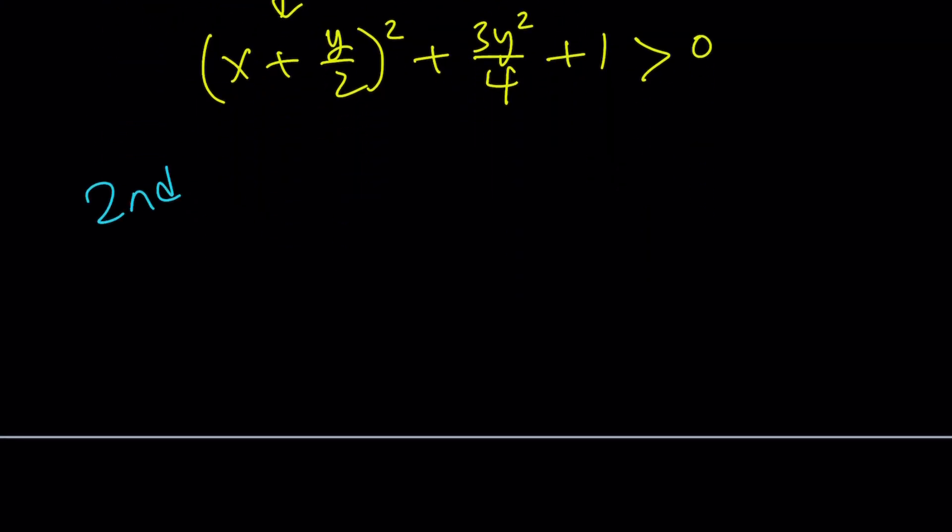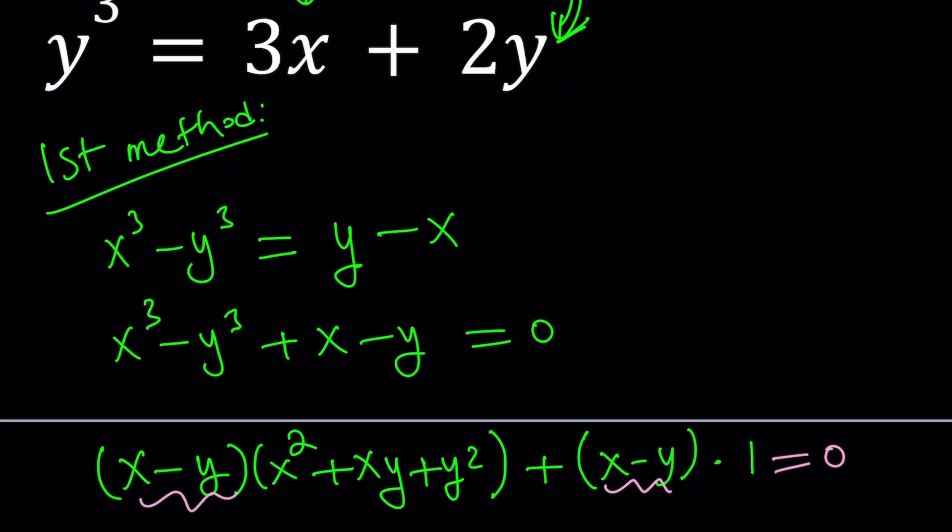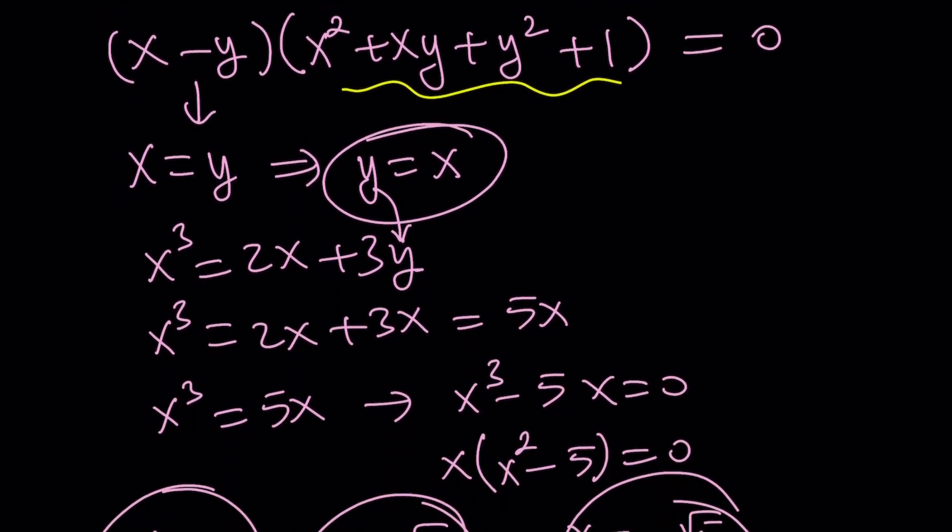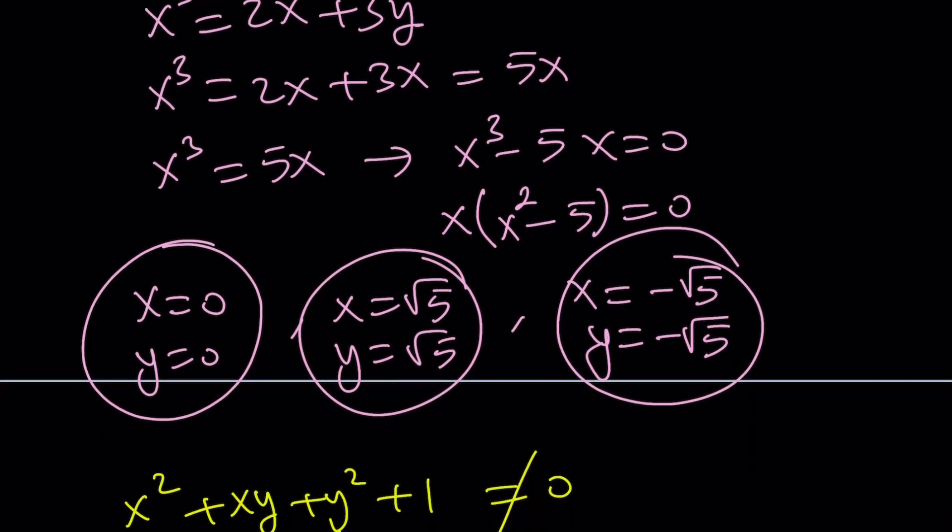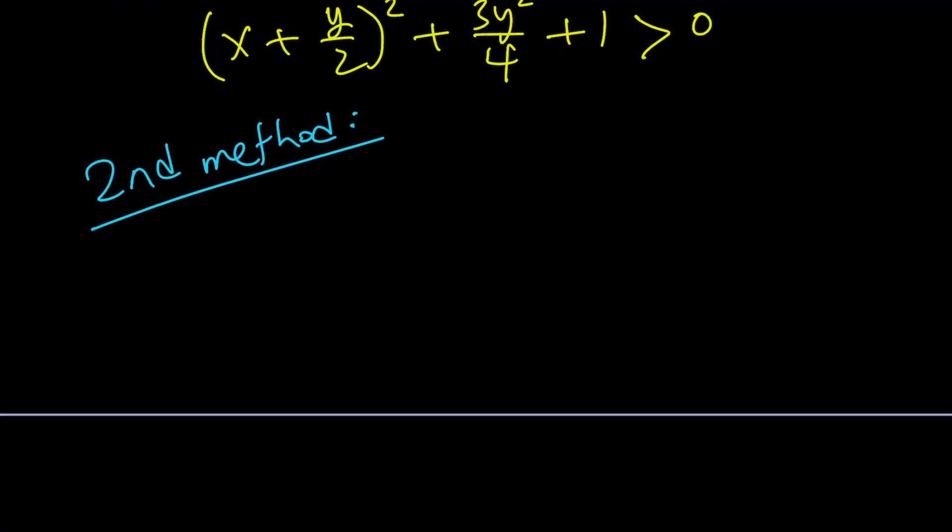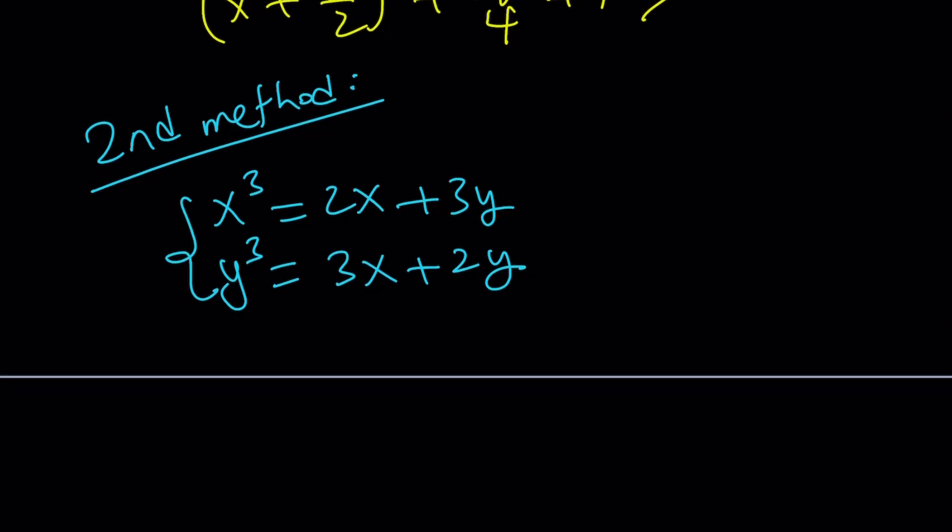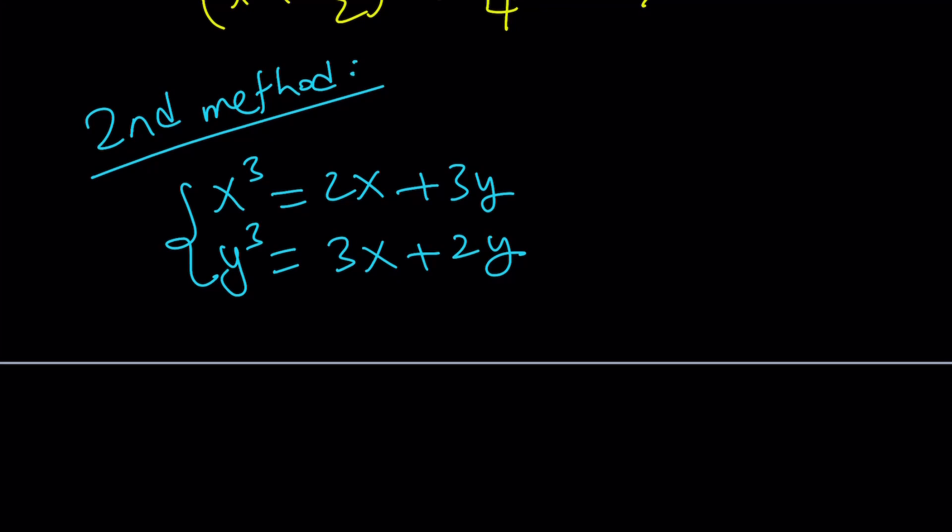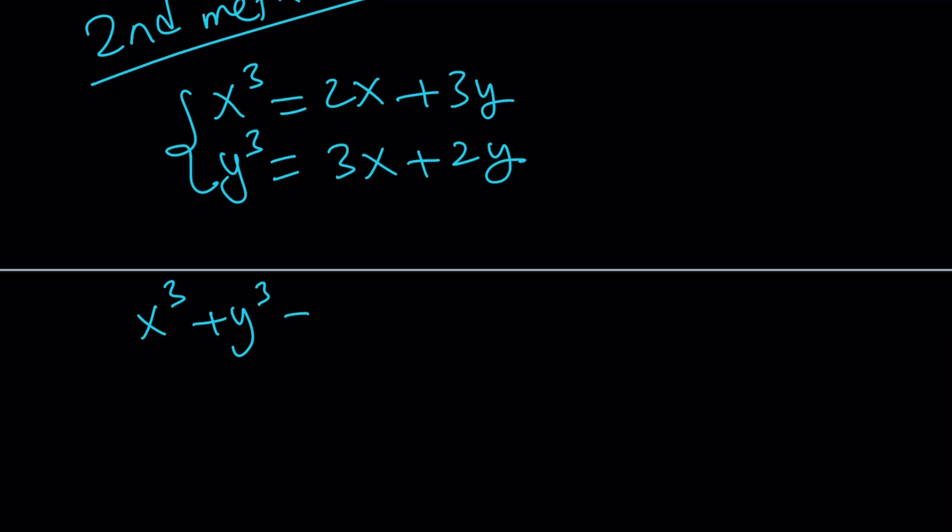So let's look at the second method now. For our first method, basically what we did was subtracting these two equations and getting something factorable. The first factor gave us three pairs. And when I show you the graph, this will make more sense. The graphs are actually pretty interesting for these functions. So here's the second method. Let me rewrite the original problem. Instead of subtracting, why not add them? Let's add these equations. We get x³ + y³ = 5x + 5y.